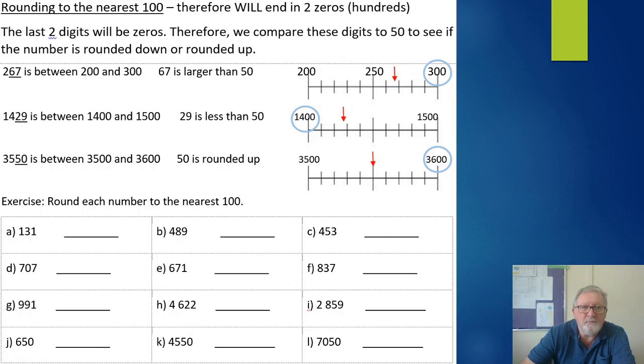In larger numbers we still look at the last two digits and compare that to 50. 1429 is between 1400 and 1500 - notice two zeros, two zeros - they're rounded to the nearest 100. 29 is less than 50, that's where it would fall on the number line, so it's rounded down to 1400. 3550 - again I've underlined the last two digits - it's between 3500 and 3600. 50 is always rounded up so we rounded up to 3600.